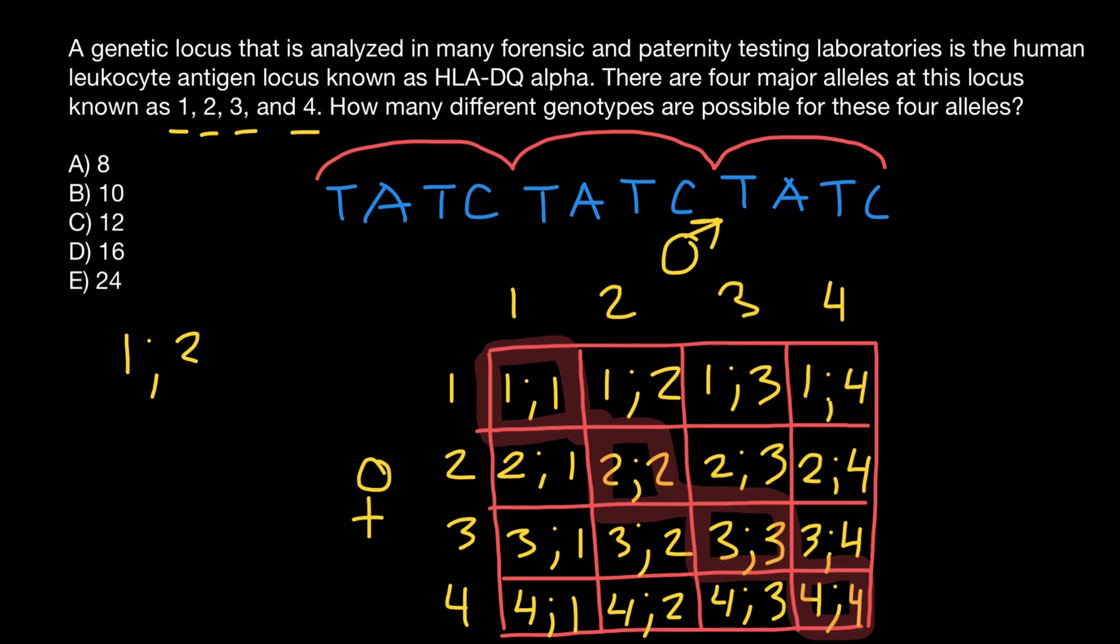So 1 and 3 equals 3 and 1. Or say 4 and 1 and 1 and 4 is going to be also the same genotype. 3 and 2, 2 and 3 is going to be the same genotype. That means that we can cross out all this half and we are going to get four unique combinations that produce one band plus 1, 2, 3, 4, 5, 6 combinations that produce two bands. So total number is 10.